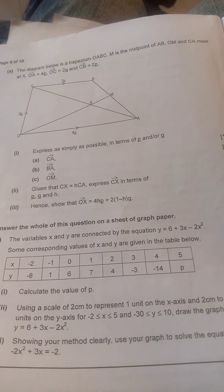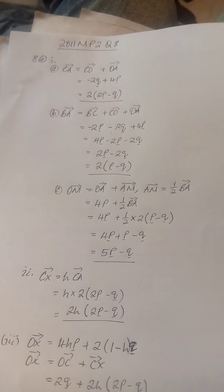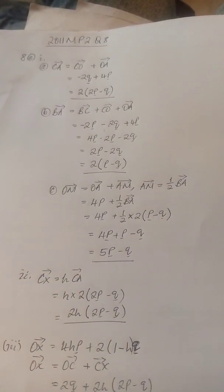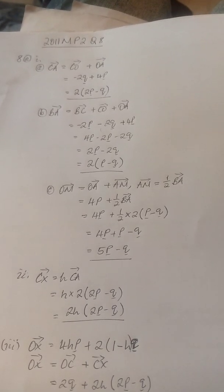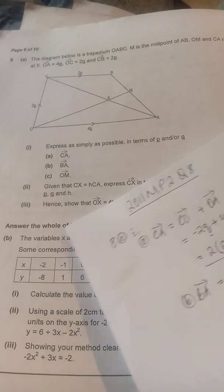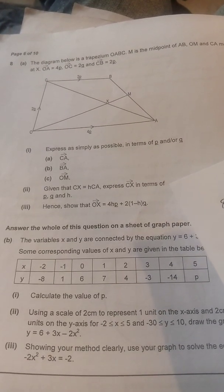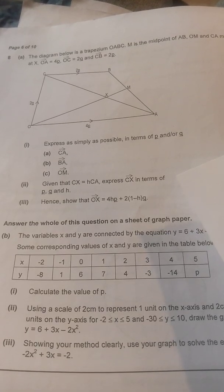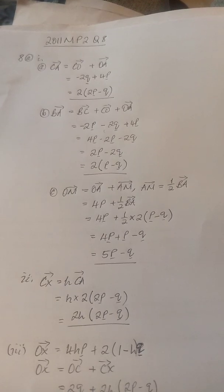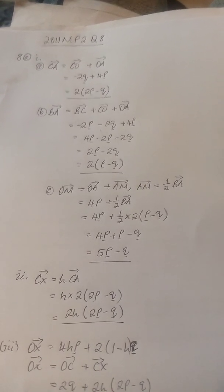The first part asks us to express CA in terms of P and Q. To move from C to A, we go via O: CA = CO + OA. CO is the negative of OC, so CO = -2Q. OA = 4P. Therefore CA = -2Q + 4P, which simplifies to 2(2P - Q) as our final answer.